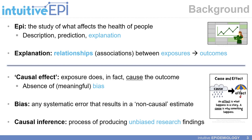Bias is any systematic error that results in a non-causal estimate from our study. Therefore, causal inference is the process of producing unbiased research findings.